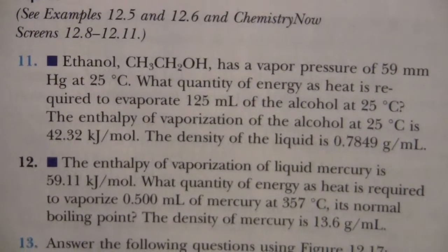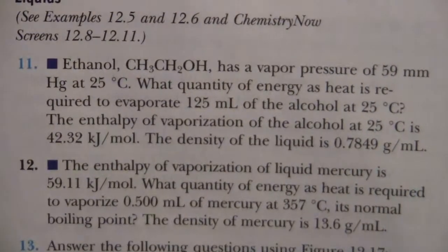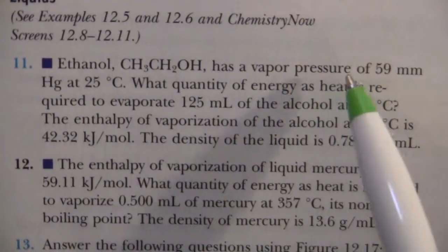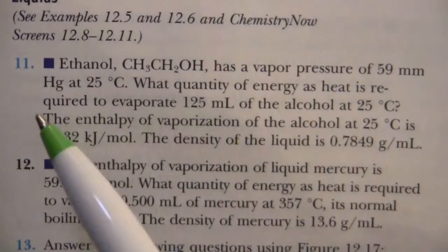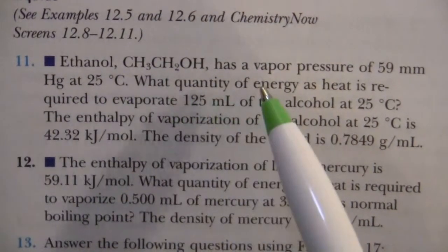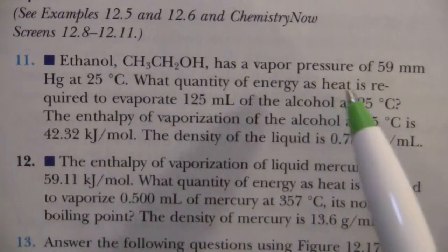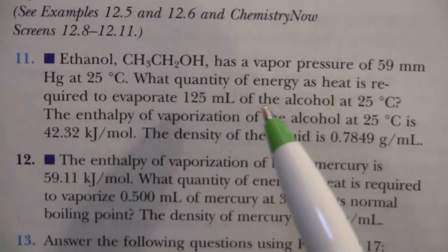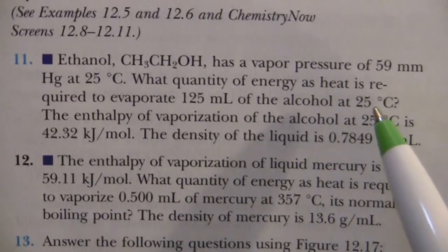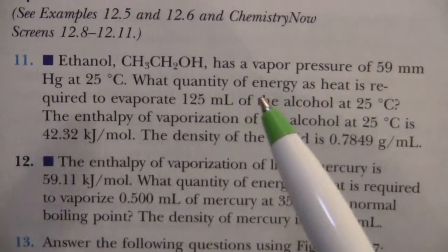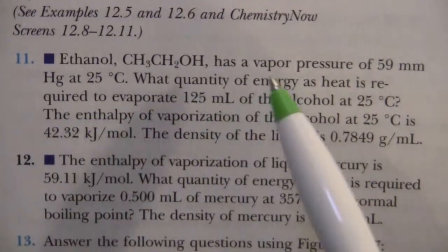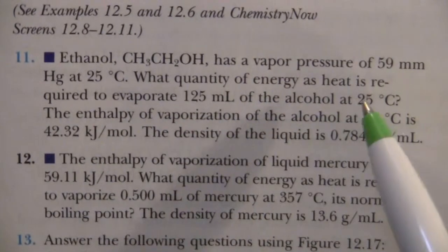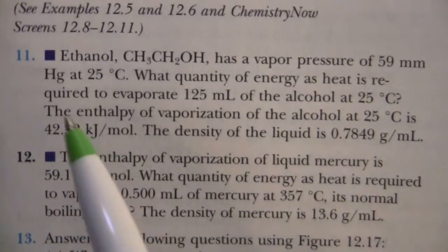This is problem number 11 from the homework. It says ethanol has a vapor pressure of 59 millimeters of mercury at 25 degrees. What quantity of energy as heat is required to evaporate 125 milliliters of the alcohol at 25 degrees? So we're wanting to know how much energy, how much heat is required to evaporate this much of the alcohol.